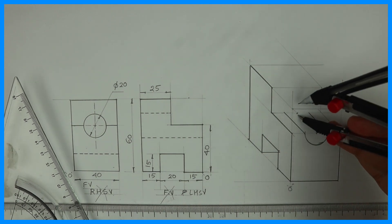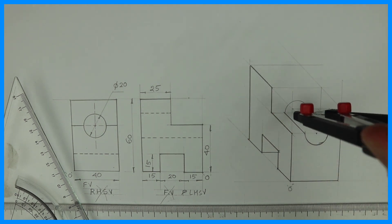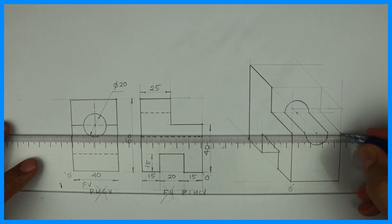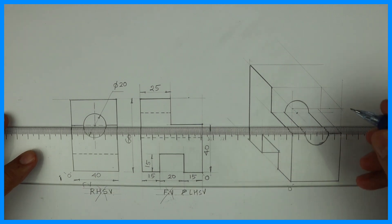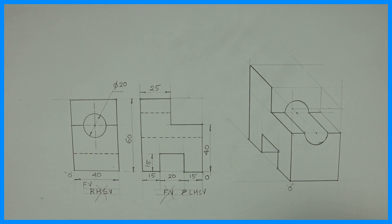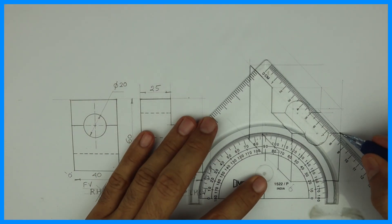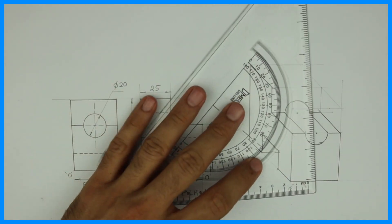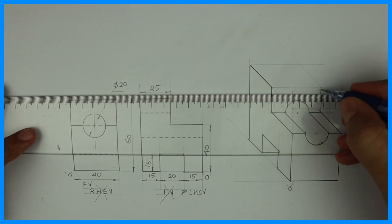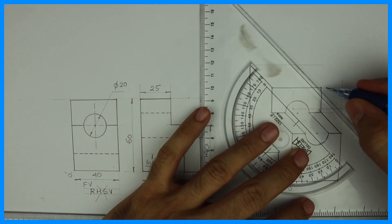It is a half circle because if you see the front view you will see a full circle, but there is a dark line at the diameter, which means this circle is divided into two parts — half circle here, half circle behind. Half circle here, half circle behind.